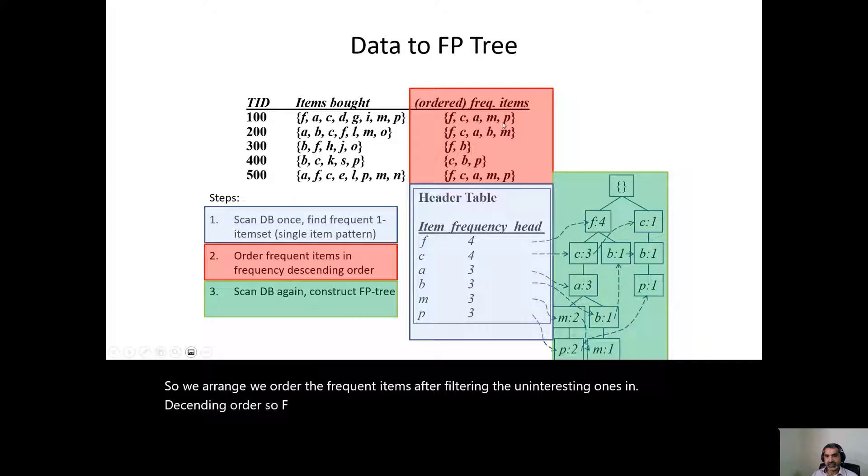So F, C, A, M, P. This particular transaction becomes F, C, A, M, P. This transaction becomes F, C, A, B, M. And so on. Are you with me? Yes.